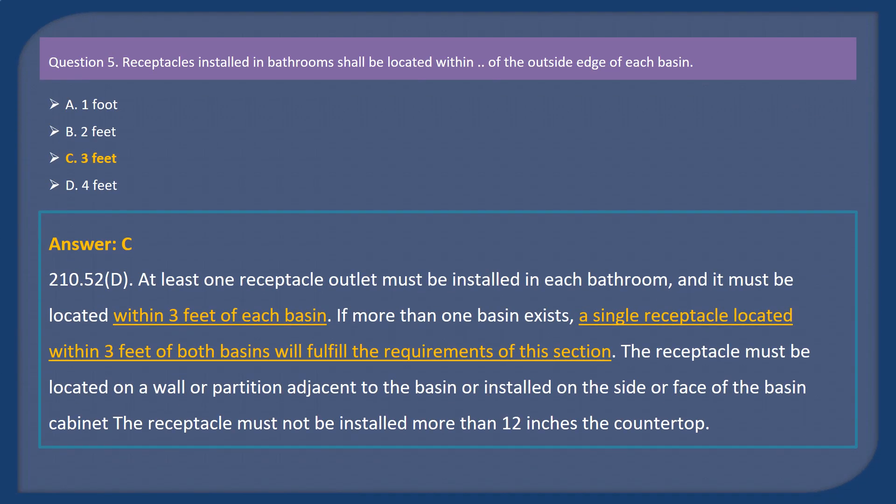Answer: C. Explanation. 210.52D. At least one receptacle outlet must be installed in each bathroom, and it must be located within 3 feet of each basin. If more than one basin exists, a single receptacle located within 3 feet of both basins will fulfill the requirements of this section. The receptacle must be located on a wall or partition adjacent to the basin or installed on the side or face of the basin cabinet. The receptacle must not be installed more than 12 inches the countertop.